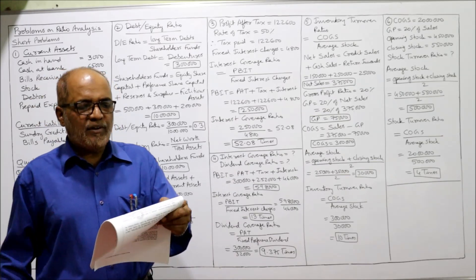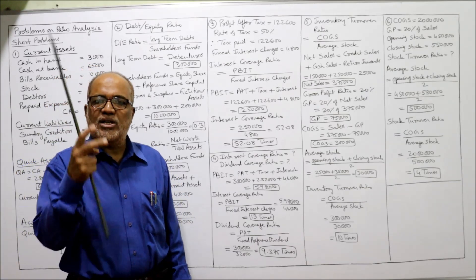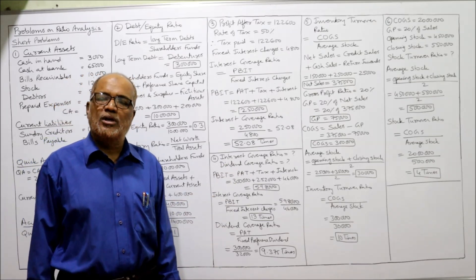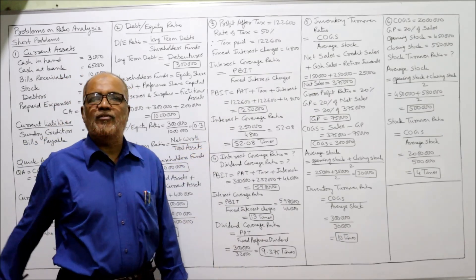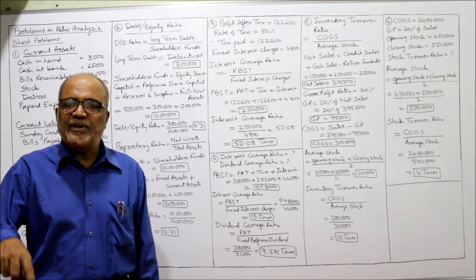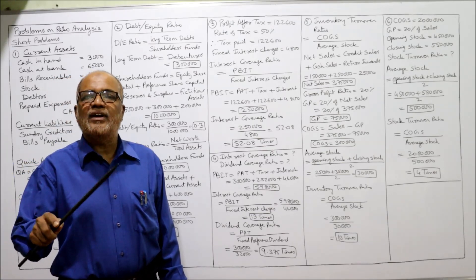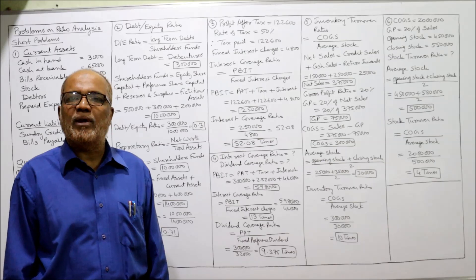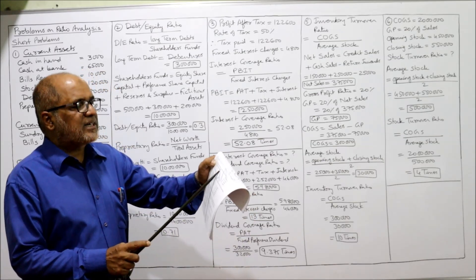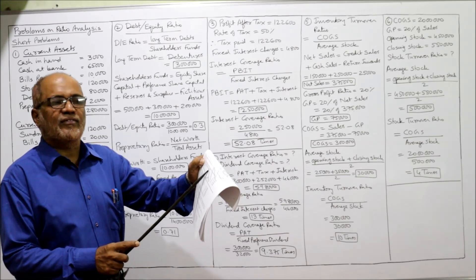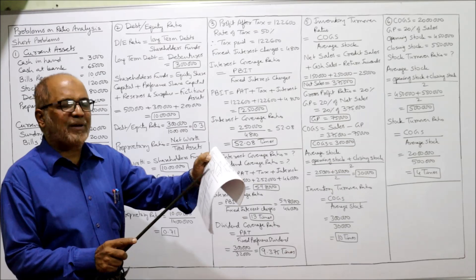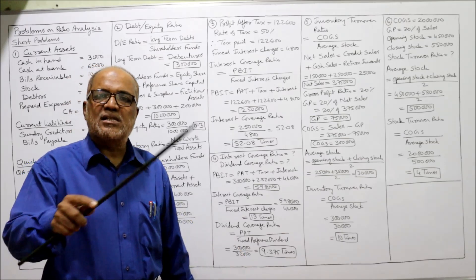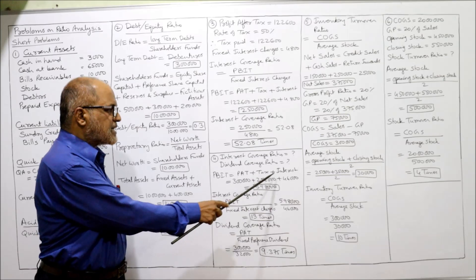Problem 4: From the following particulars, calculate coverage ratios — interest coverage ratio and dividend coverage ratio. Interest coverage ratio: PBIT divided by fixed interest charges. Dividend coverage ratio: PAT divided by fixed preference dividend. Data given: net profit after tax (PAT) 3 lakh; income tax 2,50,000; interest 46,000; preference dividend 32,000. PBIT equals PAT plus tax plus interest: 3,00,000 plus 2,50,000 plus 46,000 equals 5,98,000.